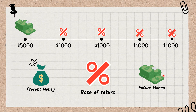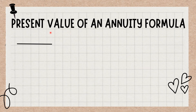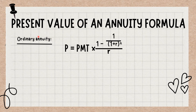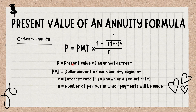The formula for the present value of an ordinary annuity is as follows. An ordinary annuity pays interest at the end of a particular period rather than at the beginning. P equals PMT multiplied by 1 minus 1 divided by 1 plus R to the power N, divided by R. Where: P equals present value of an annuity stream, PMT equals dollar amount of each annuity payment, R equals interest rate, also known as discount rate, and N equals number of periods in which payments will be made.